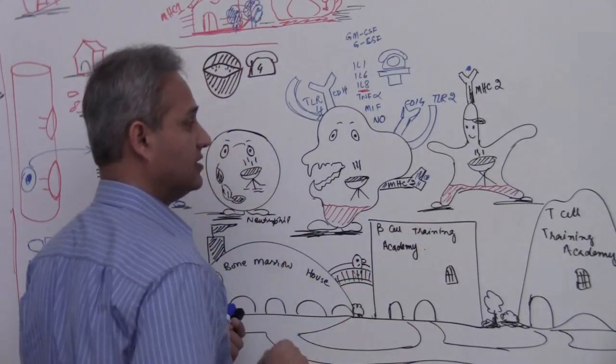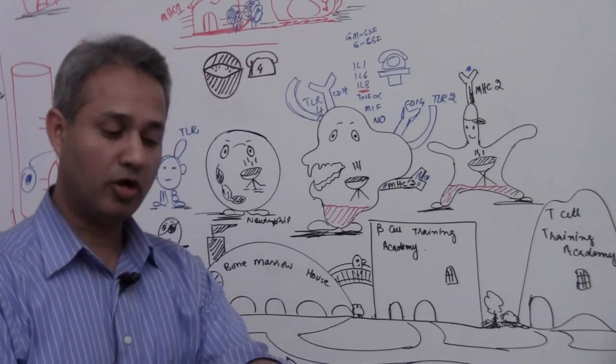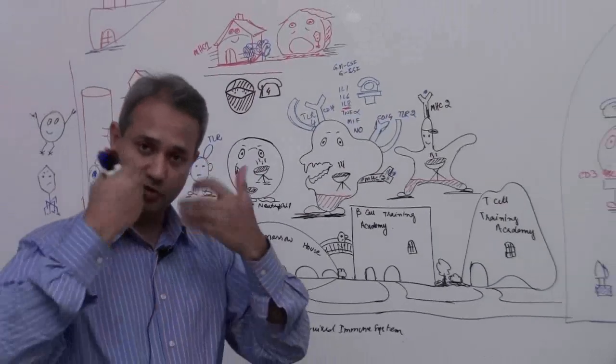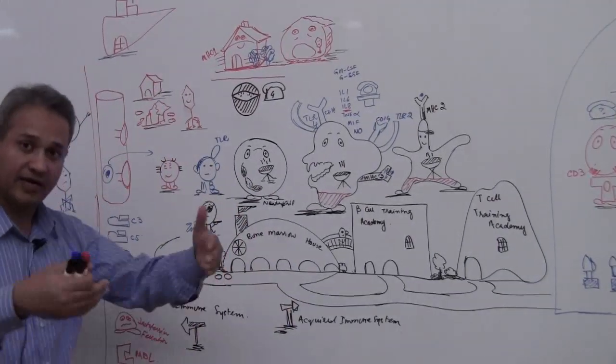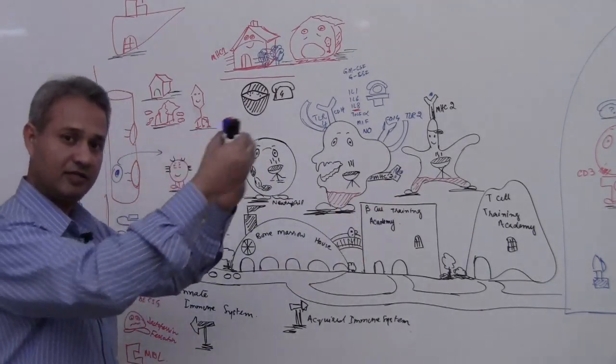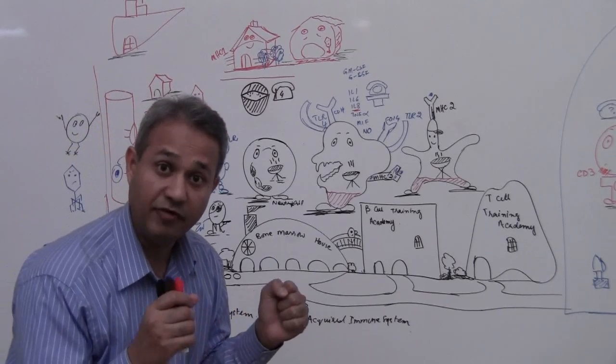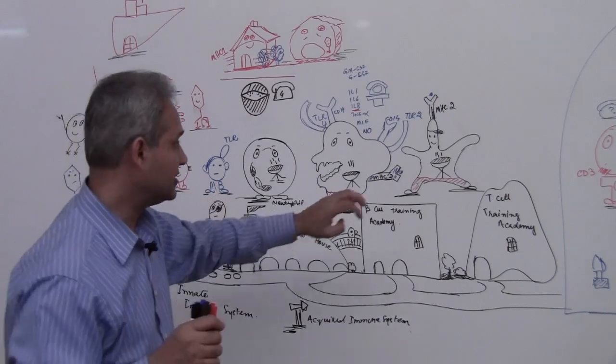Dendritic cell is also a very important cell of the innate immune system. Normally, dendritic cells are found under most of the skin surfaces and the mucous surfaces. These are the guys who are sitting right behind the walls of the city, right under the walls are sitting the dendritic cells. They are sitting there, they are waiting. A pathogen comes, they are going to grab it.